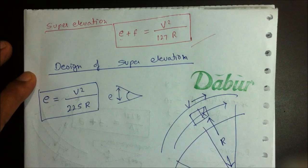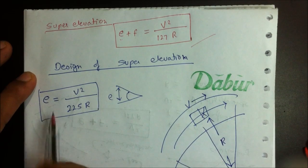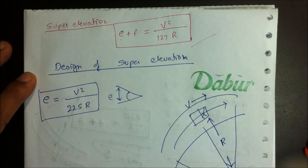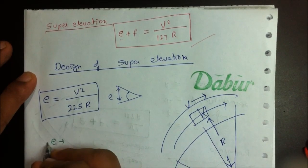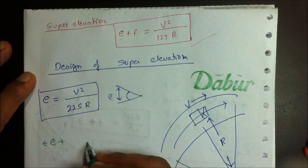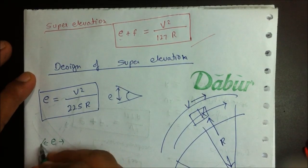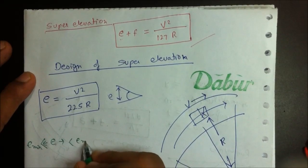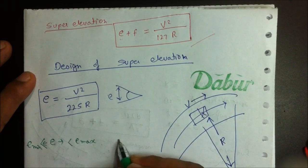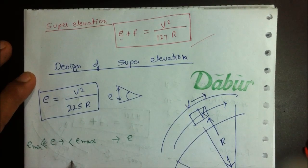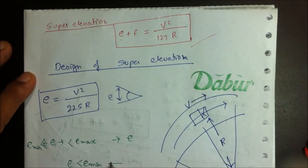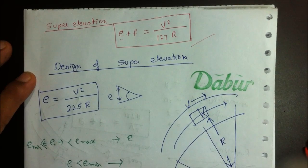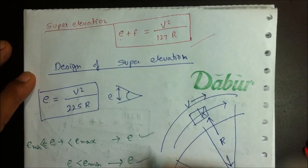For any problem, first calculate E from V squared upon 225R. If this super elevation E is greater than E_minimum and less than E_max, simply provide the super elevation value as E. If E is less than E_minimum, still provide the super elevation as E_minimum.